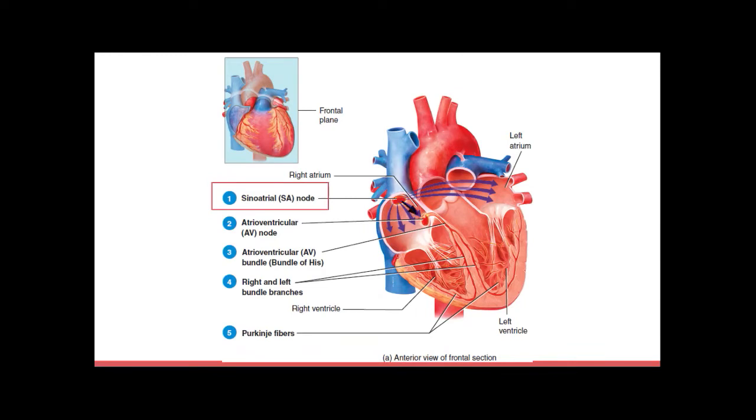So SA node goes through the atria. Next, this action potential reaches the AV node, or the atrioventricular node. This node is located in the interatrial septum. So interatrial means between the atria. And at the AV node, the action potential actually slows considerably as a result from different structures in the cell, like cell structures in the AV node.